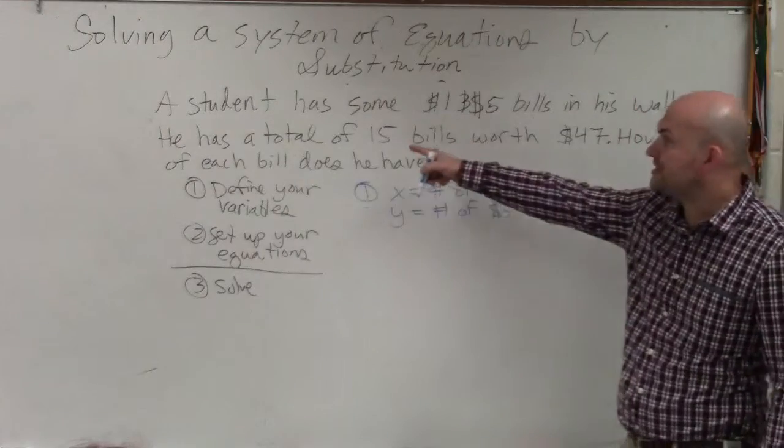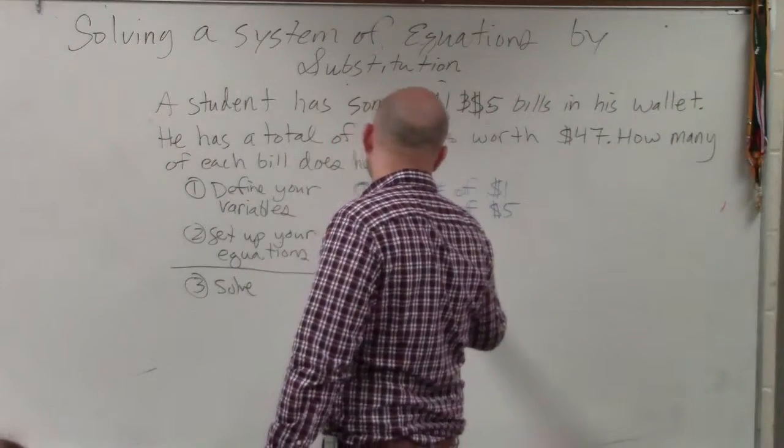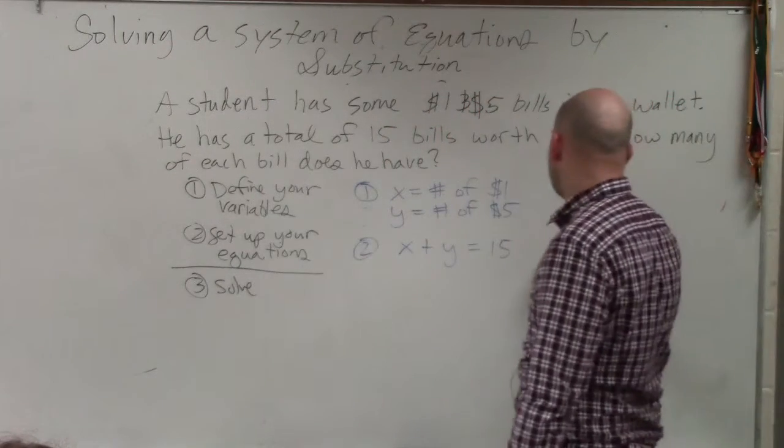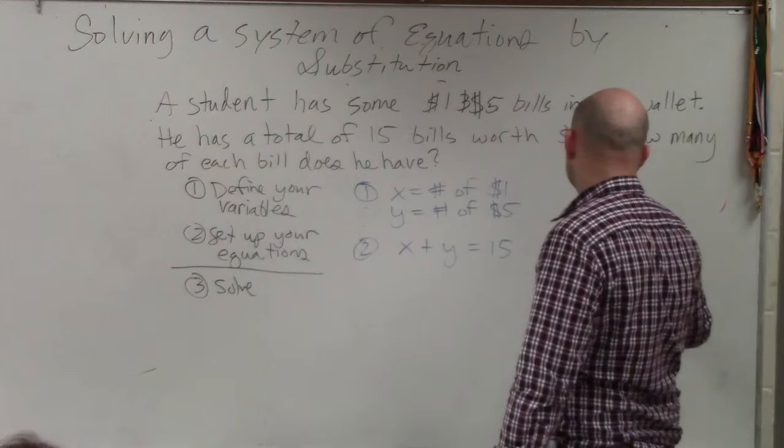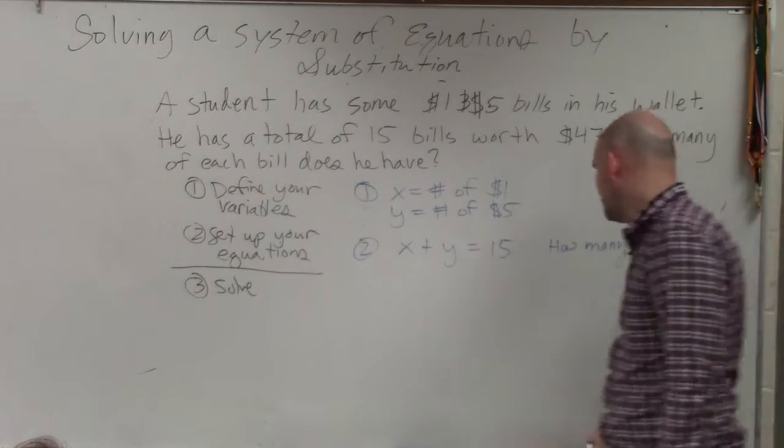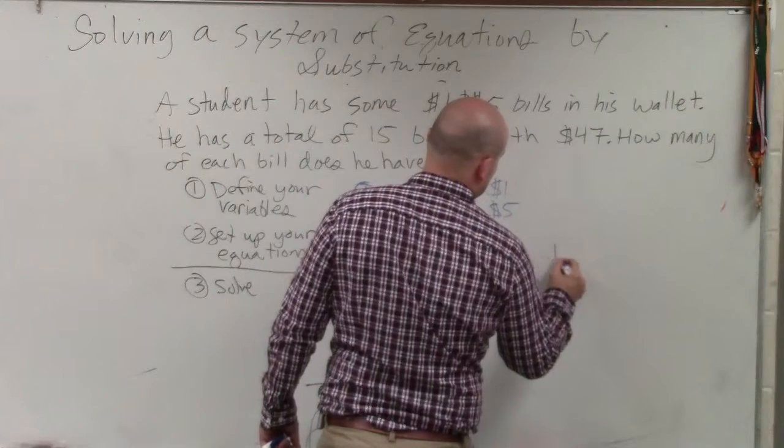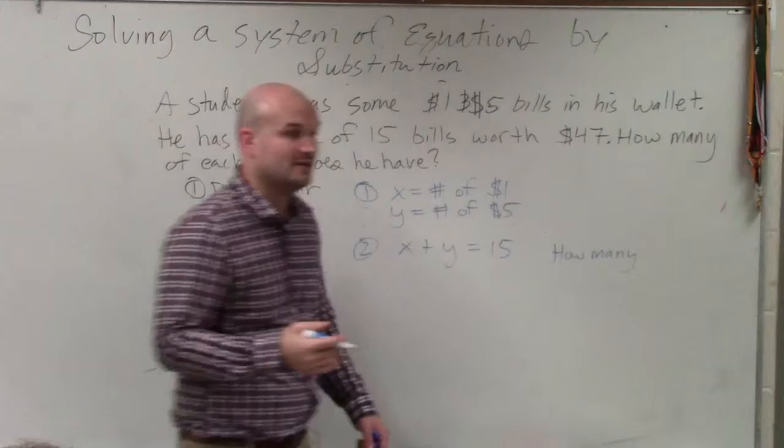But anyways, so we know that he has a total of 15 bills. Remember, total represents the sum. So x plus y equals 15. Now remember, that represents how many. That equation represents how many total he has.